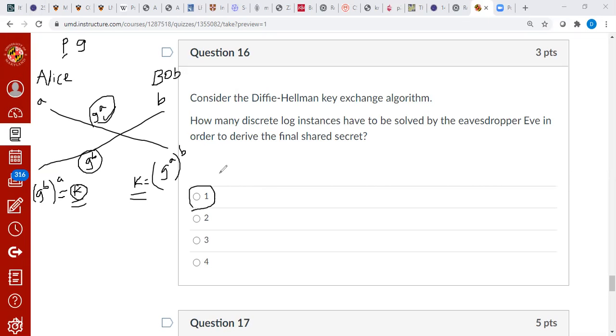That's the reason why I start from one, two, three, four, rather from zero. Because we don't know. So one seems to be the reasonable answer because you have to solve, you have to find A from G power A or B from G power B. That's the answer basically for this problem. Let's move on to the next problem.